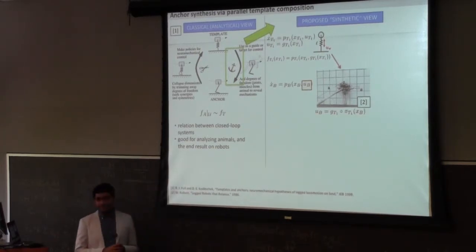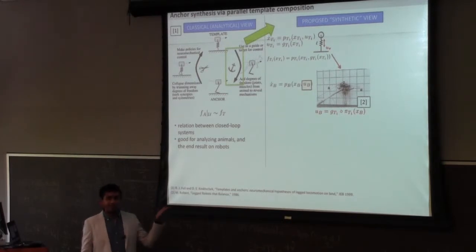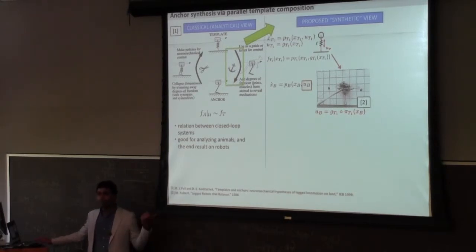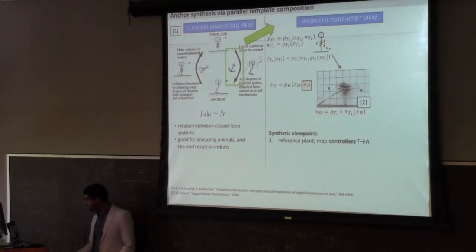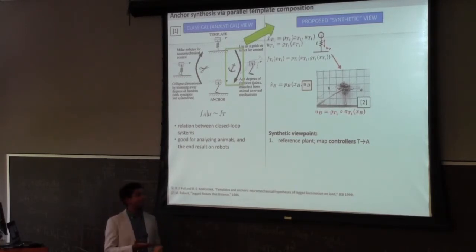Now I want to embed this vertical hopping system in a robot that can go up and down but also sideways. The complicated system has its own dynamics and inputs. The question is: what control input should I apply to this complicated system such that the behavior of the simpler system is recovered? Ideally, I'd just use the controller of the vertical hopper, D sub T1, on whatever states are relevant — pi is a projection — and apply this controller to the complicated system. This is the simplest idea: a map to map controllers from template to anchor.